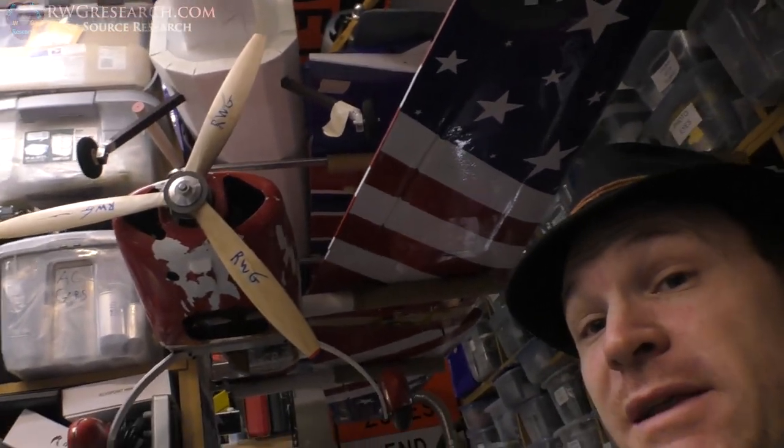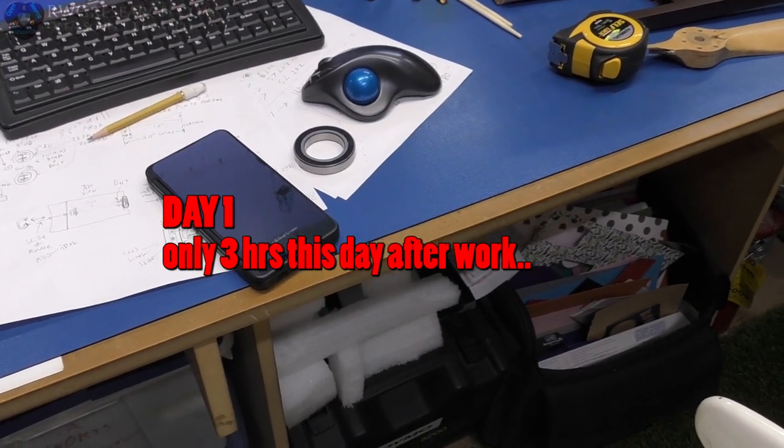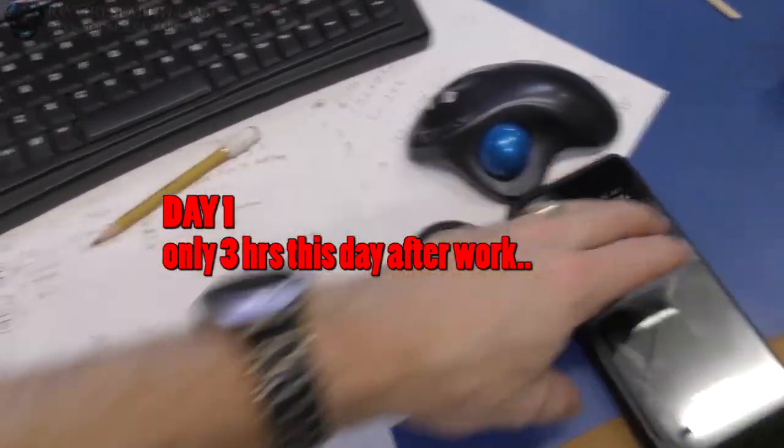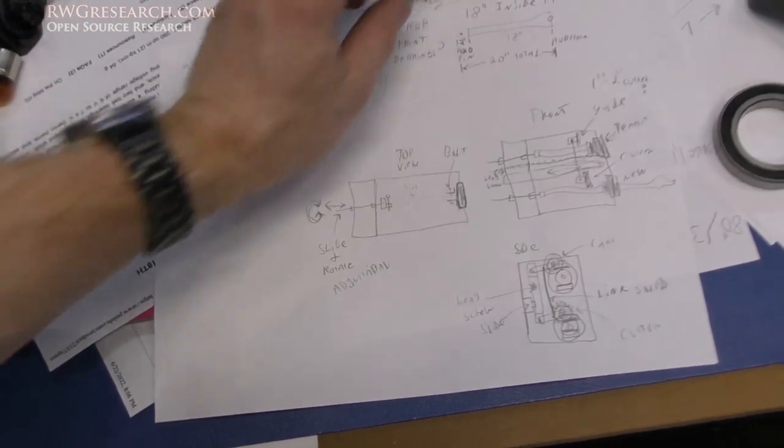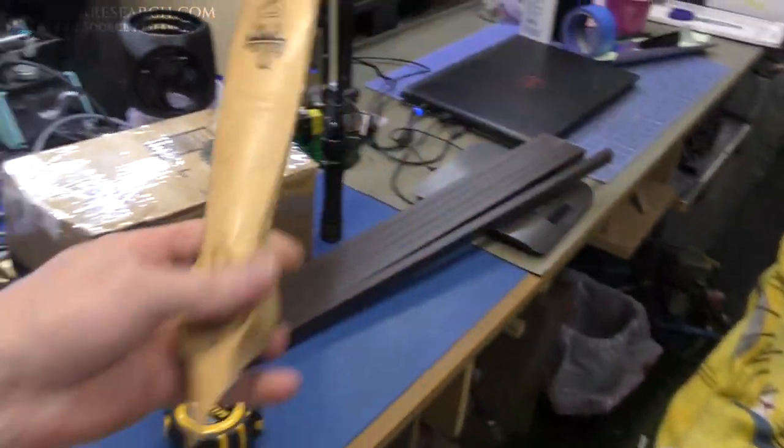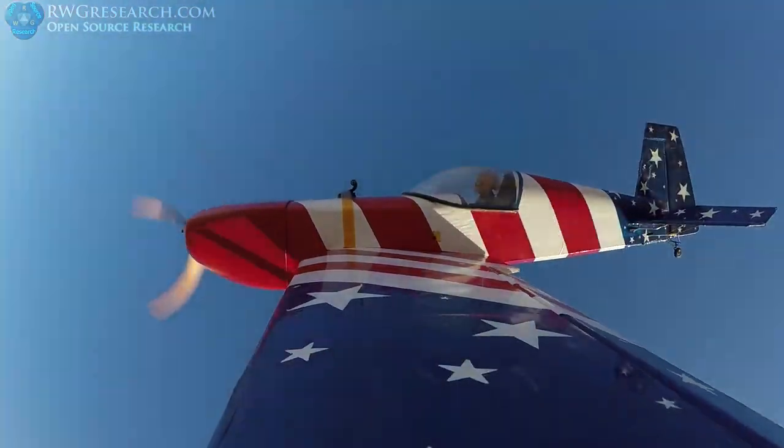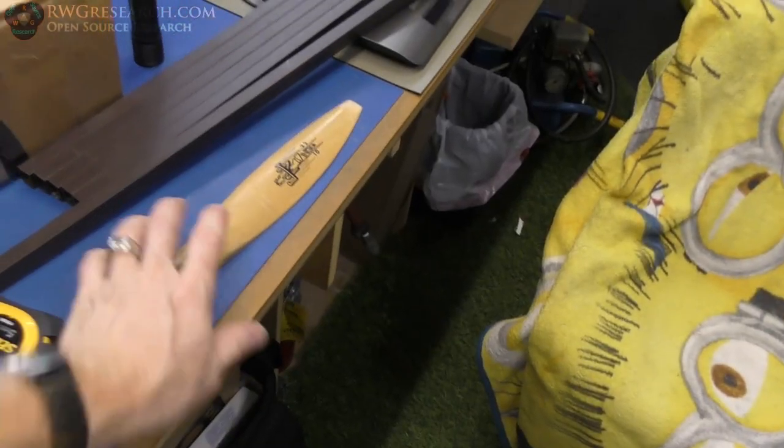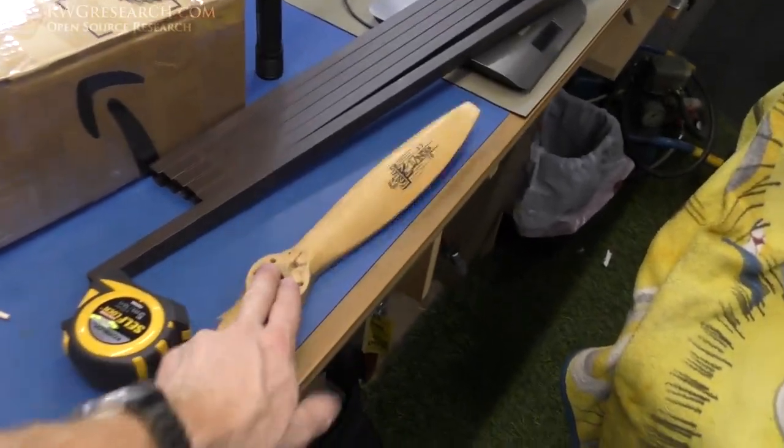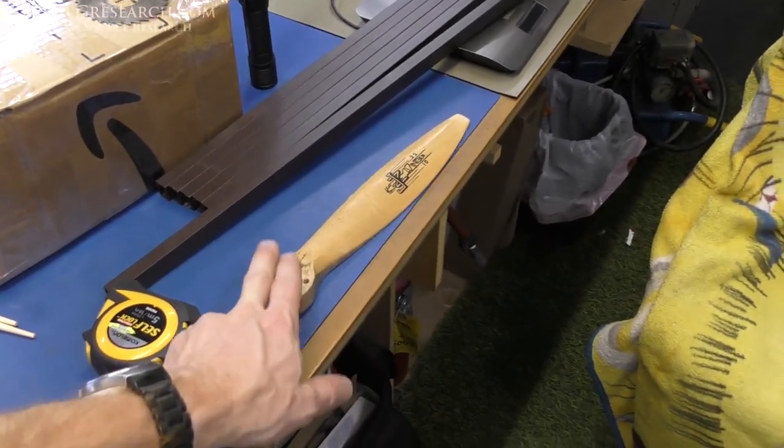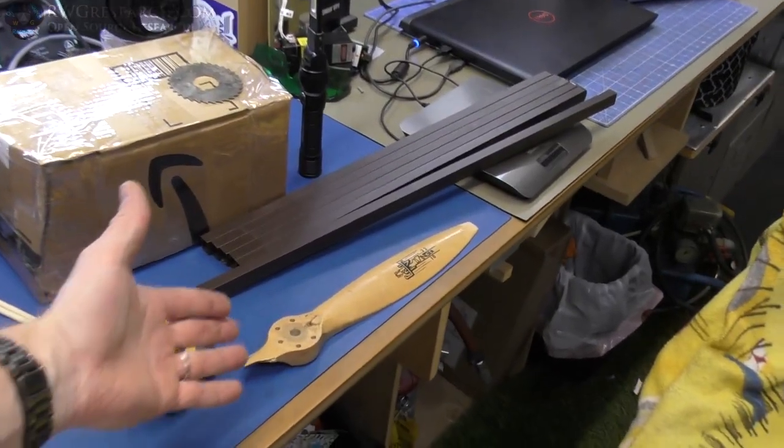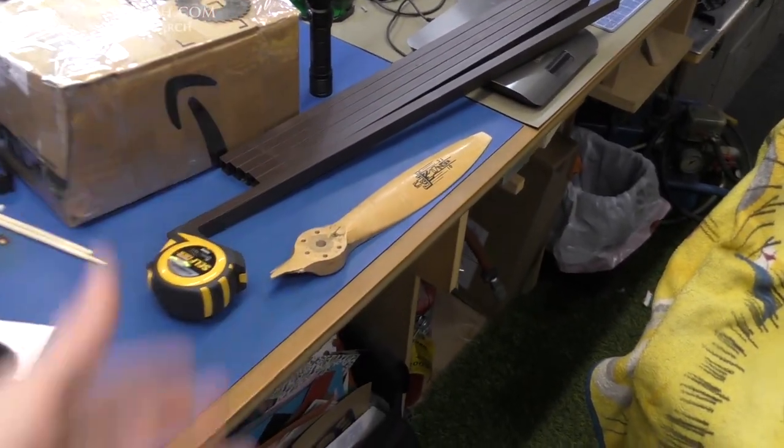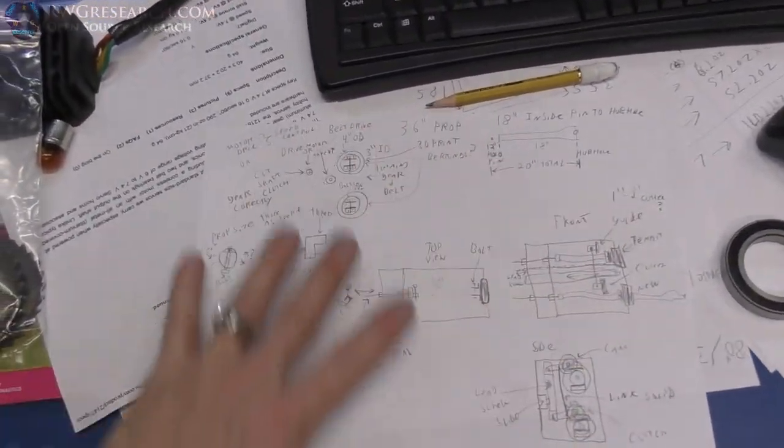What's up everybody, Russ here, rwgresearch.com. I had this idea and I want to make props. They are quite expensive when you get up to this scale. This is a 22 by 10. Obviously that one didn't last long, actually it lasted one flight, one and a half. These are about 30, 40, 50, 60 dollars depending on what you buy, pretty expensive.